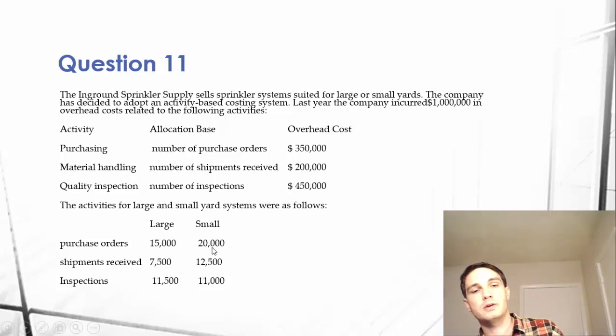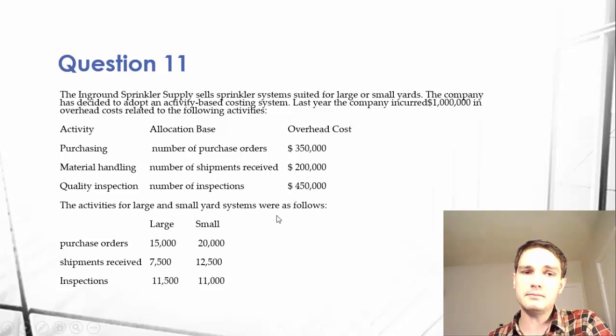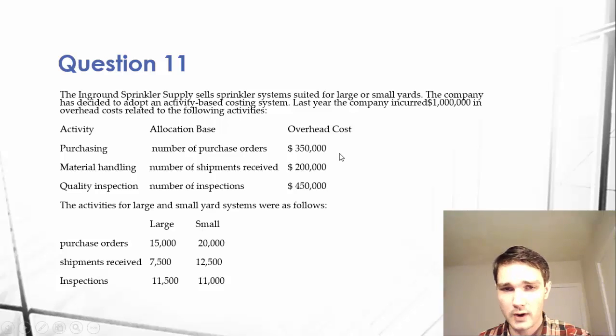Take $350,000 divided by 35,000 (the total of 15,000 plus 20,000) to see exactly how much per purchase order of overhead costs they are incurring. That was the broad overview of overhead allocation based on activity-based costing.